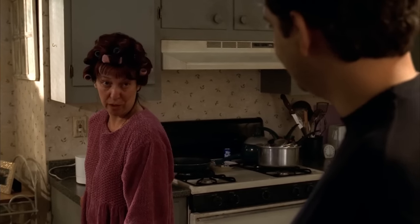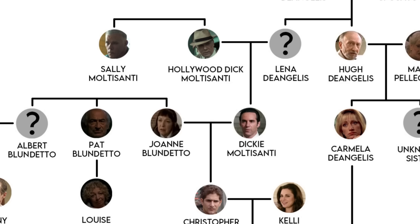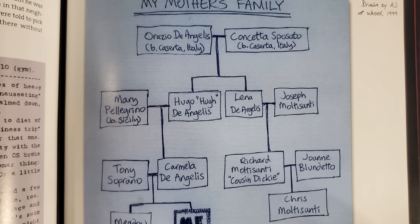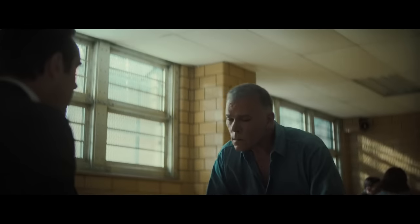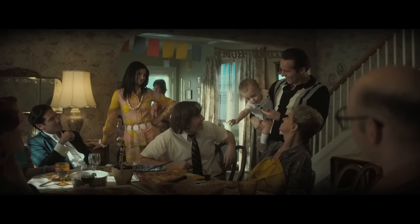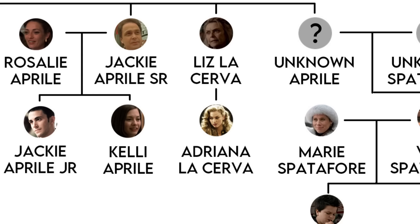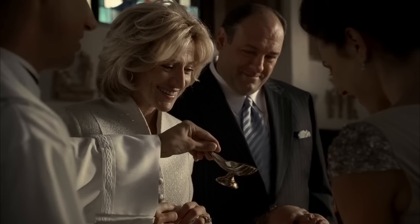Let's take a step back and look at them. Hollywood Dick Moltisanti married Lena DeAngelis, the sister of Hugh DeAngelis — Carmela's father. Together, they would have one son, Dickie. Interestingly, the book says that Dickie's father was named Joseph, so either this is a retcon for The Many Saints of Newark, or Joseph is his middle name. Hollywood Dick also had a twin brother, Salvatore Moltisanti. However, it's possible that Sally was just a hallucination for Dickie, so he might not be real. Either way, Dickie would marry Joanne Blundetto and have one son, Christopher. Christopher was engaged to Adriana LaServa, a member of the Aprile family, but ultimately Chris ended up marrying Kelly Lombardo and having one daughter, Caitlin Moltisanti.